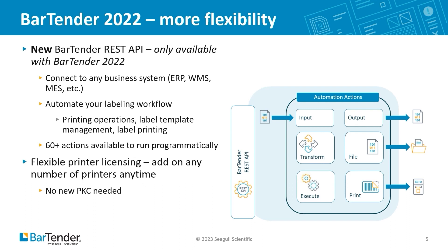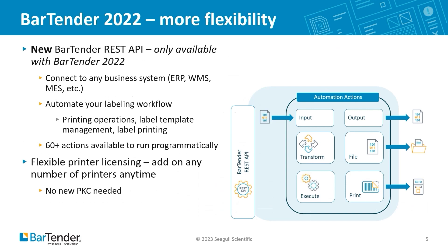The good news is also with Bartender 2022 it's got a flexible printer licensing approach. So whenever you add on any printers, which you can do at any time, you no longer need to have a new PKC or product key code, which you used to need with the older versions of Bartender. In addition to the new REST API functionality, we're pleased to announce that we've also launched the new mobile app with Bartender 2022. This is really helpful for clients that have pick and packing processes, maybe in a warehouse or a distribution center, or even in a retail environment where you need to mark down products on the shop floor and have the ability to work mobile and print on demand.